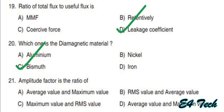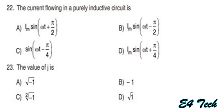Next: amplitude factor is the ratio of peak value to RMS value — that is, the ratio of maximum value to RMS value. Option C. Next: the current flowing in a purely inductive circuit. In a general circuit, current i = Im sin(ωt). In an inductive circuit, current lags voltage, so i = Im sin(ωt − π/2). Option B.